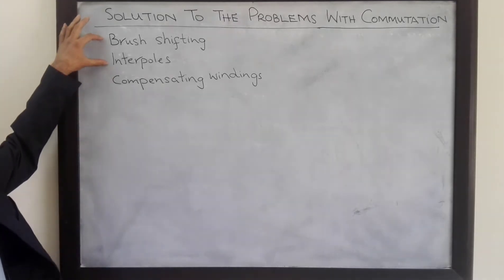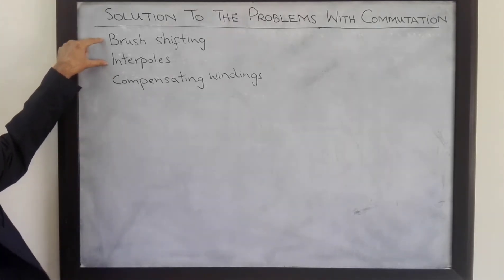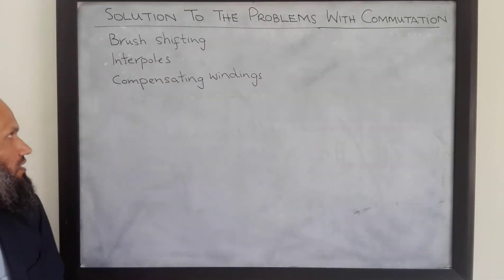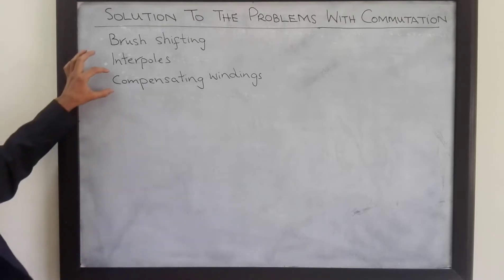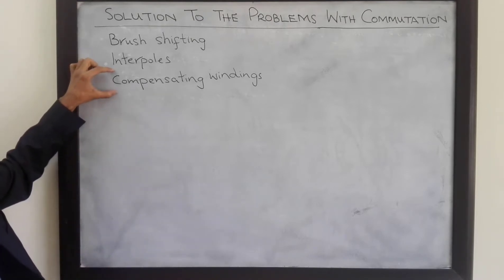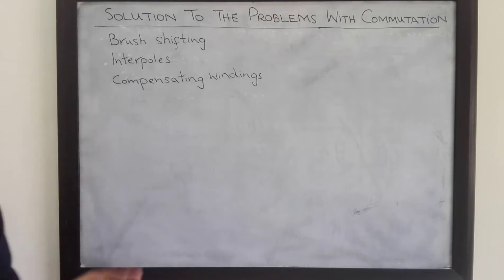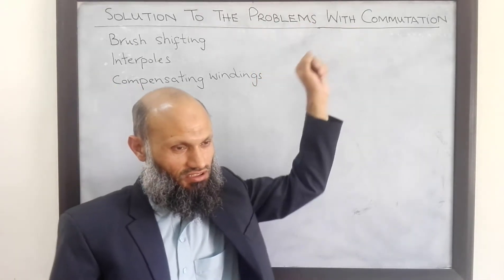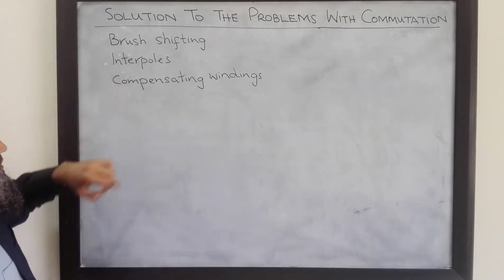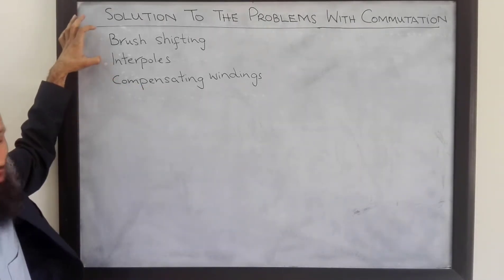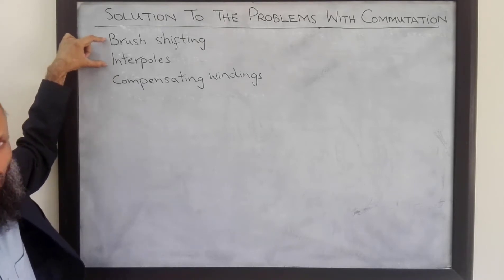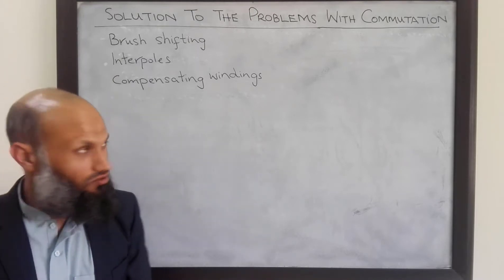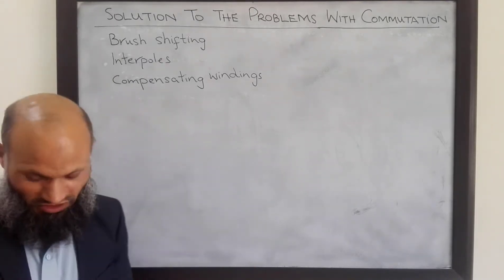In the previous lecture, we talked about the first two solutions to resolve the problems with commutation in real DC machines. In today's lecture, we shall talk about the third solution, that is the compensating windings. Compensating windings are utilized in DC machines to resolve the problems with commutation. This third solution is more expensive compared to the first two solutions; however, its performance is superior to both of them.